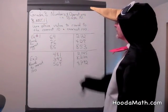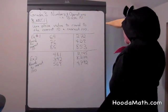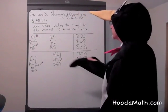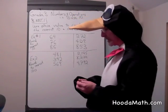We're going to talk about using place value to round to the nearest ten and to the nearest hundred. So let's look at example one. We're going to round to the nearest ten.